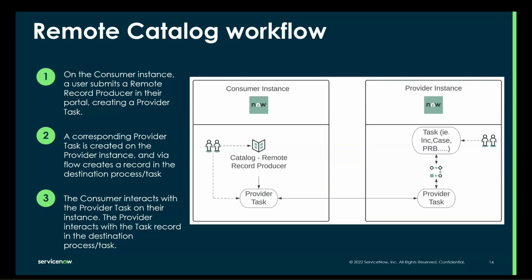That process now goes through on the provider instance. As they make updates to those records and send over additional comments or change the state, that will flow back down through the provider task to the consumer instance, so they have visibility of the status and can communicate any updates. On the consumer side they're interacting with the provider task; on the provider instance they're interacting with whatever the target destination is — an incident, case, or service catalog item — and that is where they are working within the provider instance.